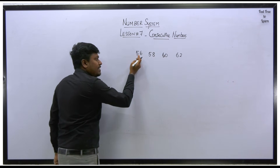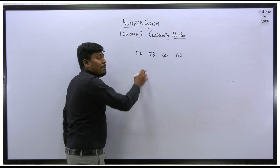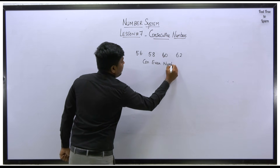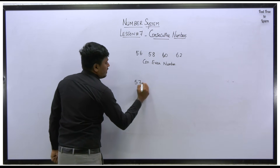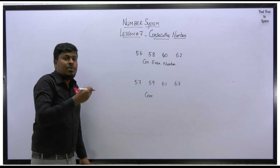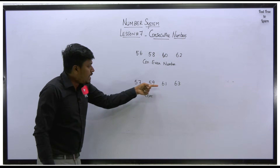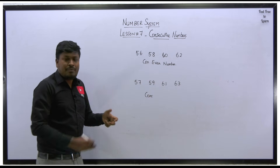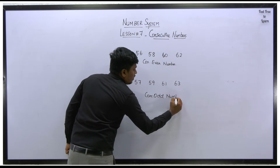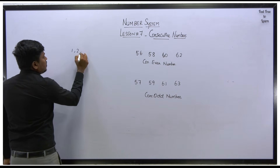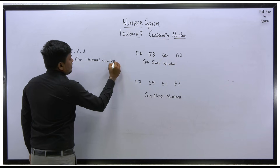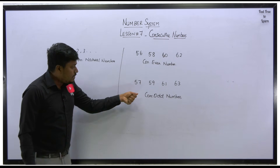For example, take the numbers 56, 58, 60, 62 — these are consecutive even numbers because all numbers are even and they follow a pattern. Similarly, 57, 59, 61, 63 is also a consecutive series: 57 plus 2 is 59, plus 2 is 61, plus 2 is 63 — it follows a logic, so it is called consecutive odd numbers. And a set starting from 1, 2, 3, 4 is called consecutive natural numbers.